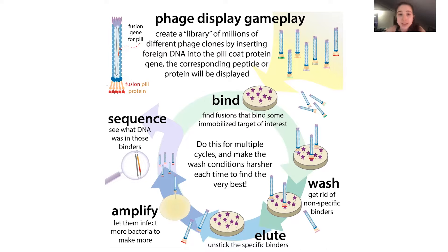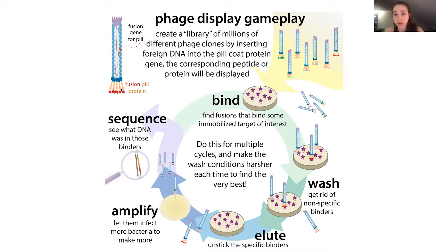What happens is you can create a library of millions of different phage clones where you insert foreign DNA into the coat protein gene. Because DNA has instructions for making protein, this is going to add a little bit of that protein — modifying the coat protein. So it's displaying your protein within its protein. Because you're making this library with millions of these different clones, you're going to have lots and lots of different versions of this phage.